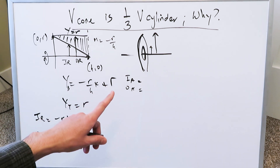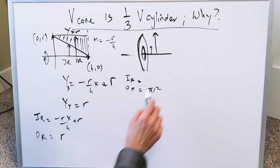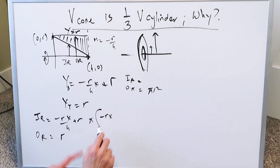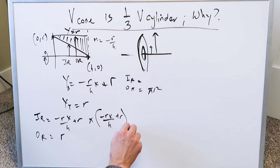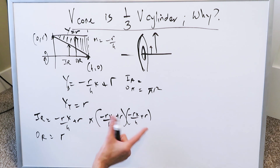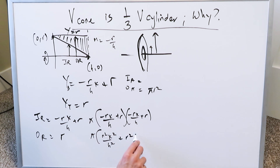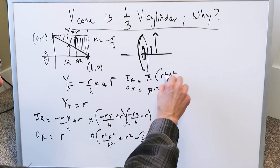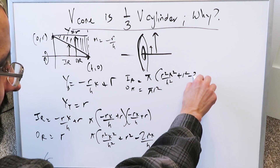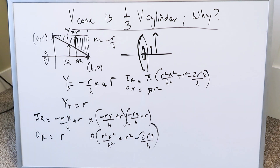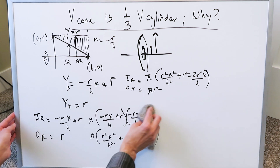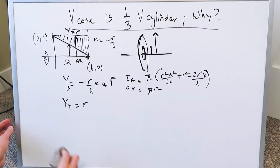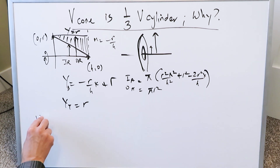With inner and outer radii, you compute inner and outer areas. The outer area is simply πr² because the cross-sections are circular. The inner area requires more work: π times the inner radius squared, which is π(−rx/h + r)². Expanding this gives π times (r²x²/h² + r² − 2r²x/h). That is your inner area.